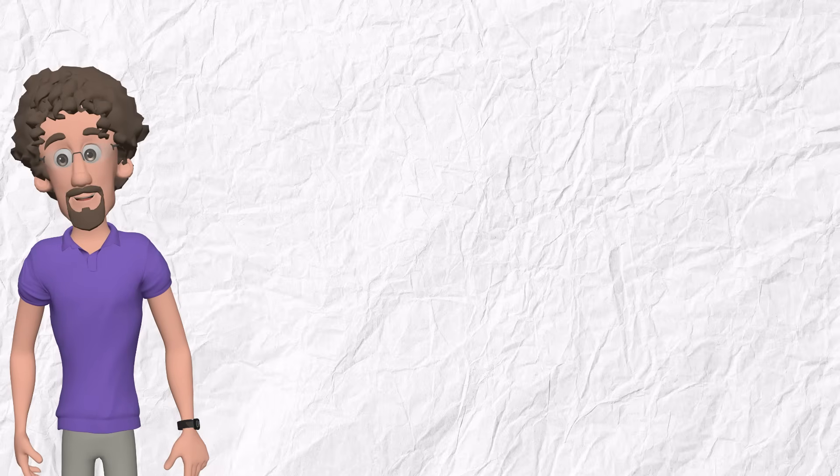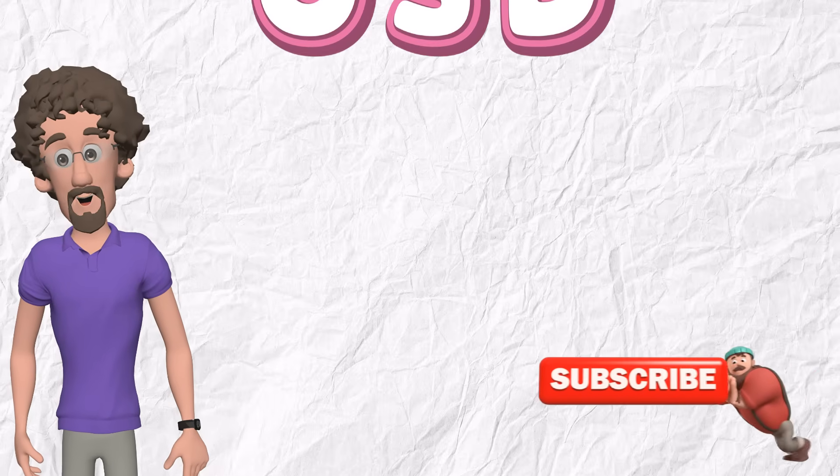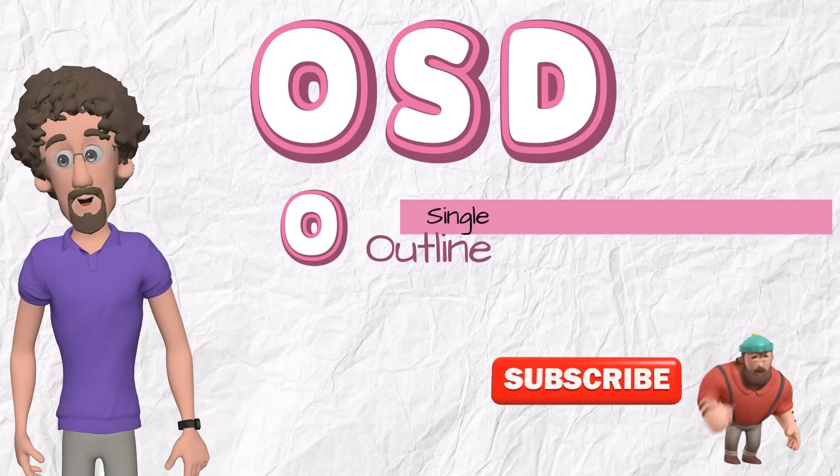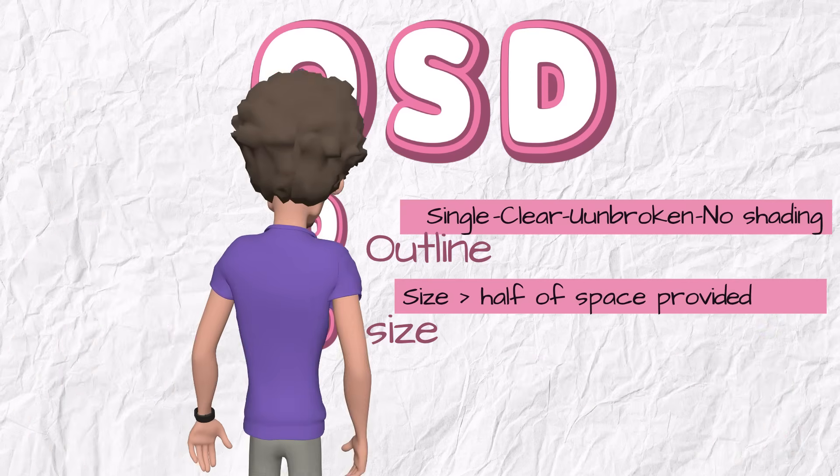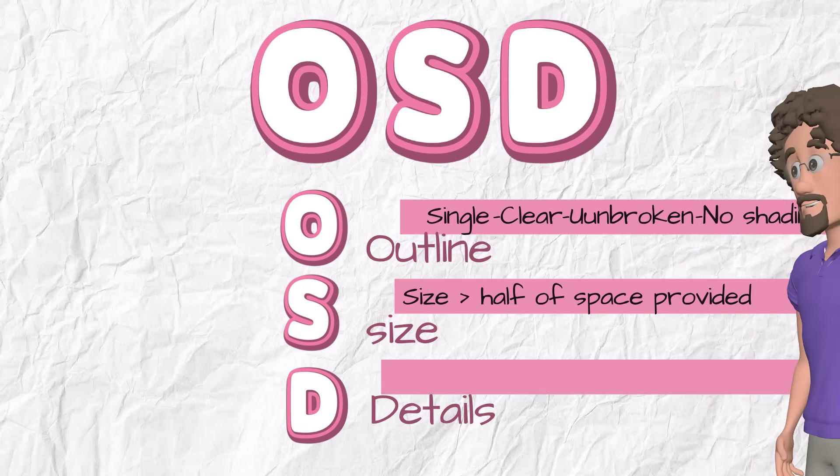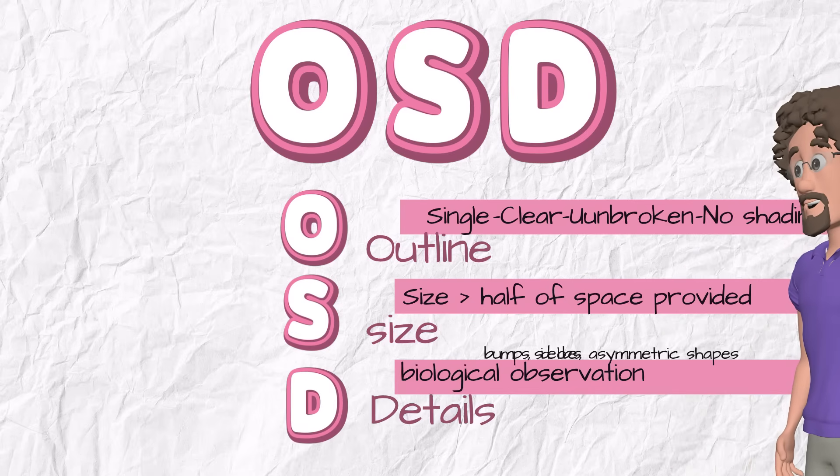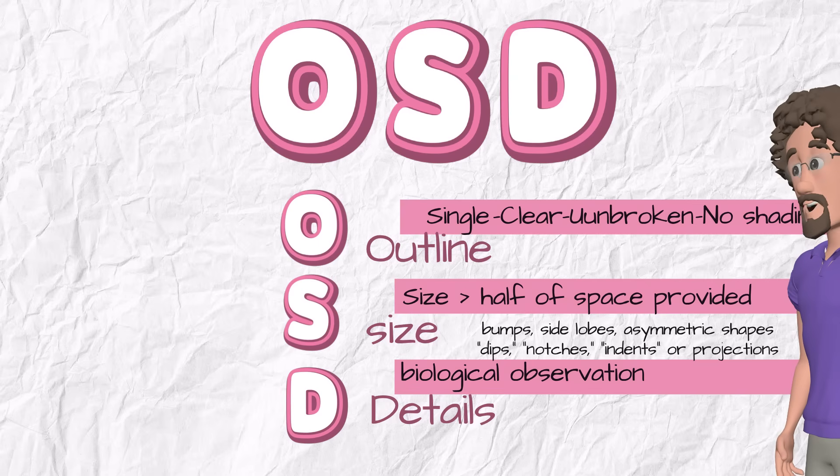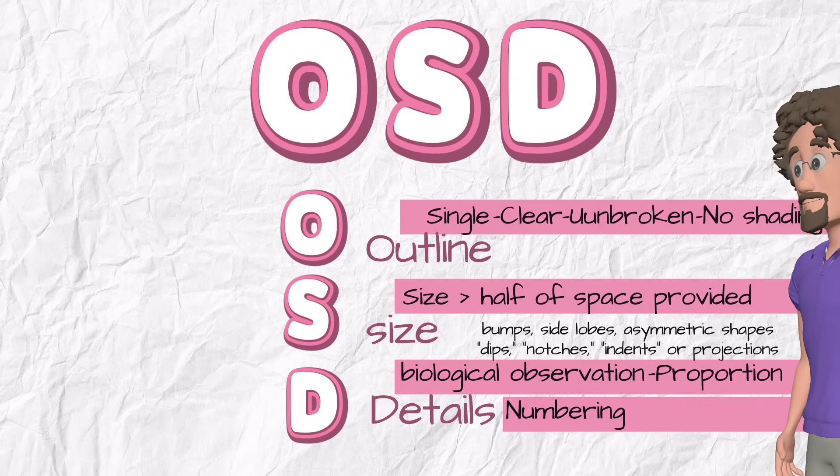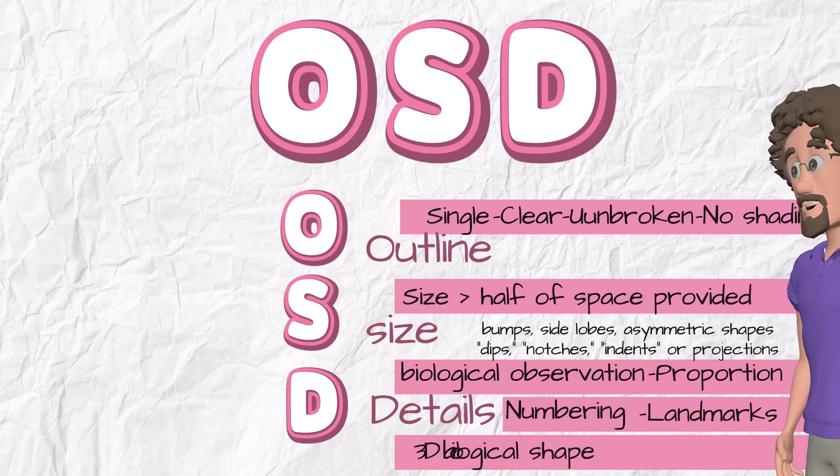I hope now it's clear. Our OSD rule. O for outline. It must be single, clear, unbroken, no shading. S for size. Size greater than half of space provided. D for details. You must train your eyes about real biological observation, including unusual bumps, side lobes, or asymmetric shapes. Search first for dips, notches, indents, or projections on the outline. You must keep proportion. Constrict to the numbering. Search for landmarks. Be aware of 3D biological shape. Careful comparison.